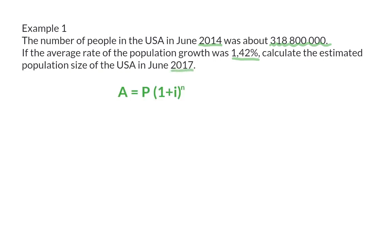We already know which formula to use, so now we can substitute. P is the present population size, and that is 318,800,000. I is the growth rate of 1.42%, which we need to divide by 100. So remember, that will be 0.0142.